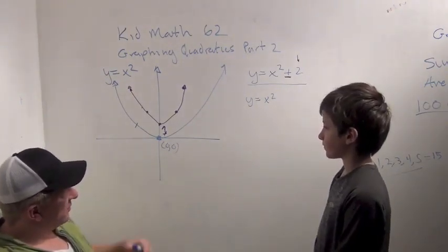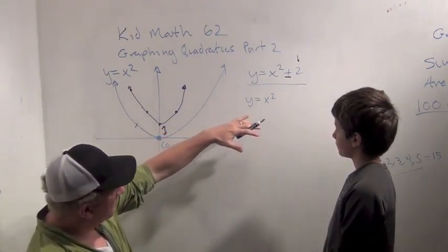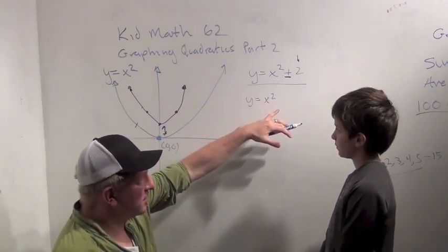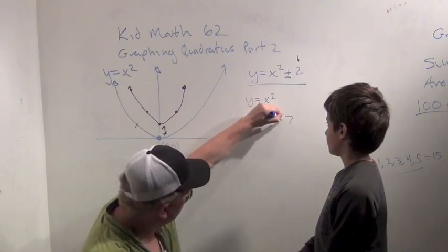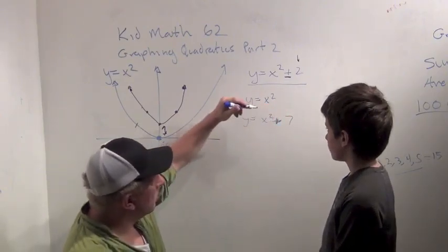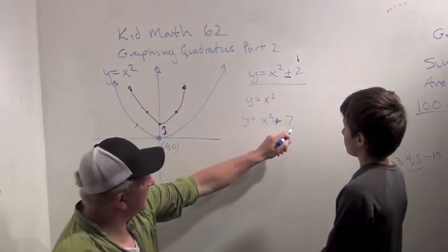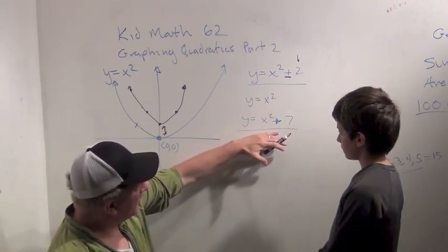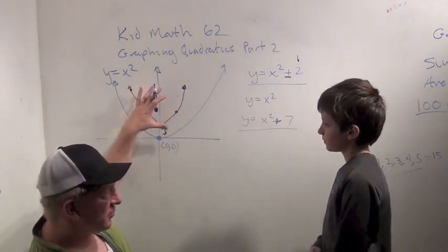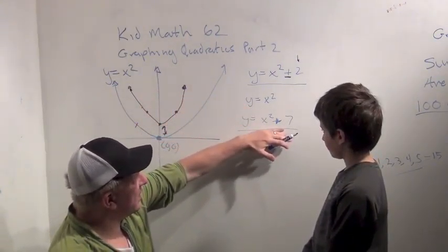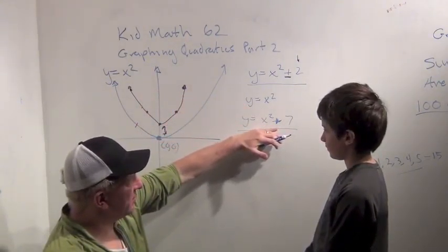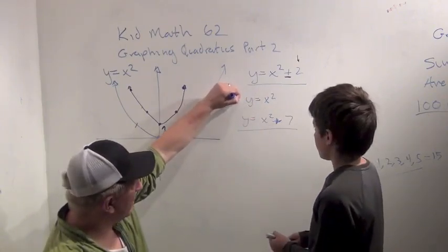Now, the next simplest thing we can do with the algebra is just add some number to this. So y equals x squared plus 7, say. And what we're trying to understand is how do we go from the algebra to the geometry? So what does this say? What does the algebra say for every number we have here on this graph?